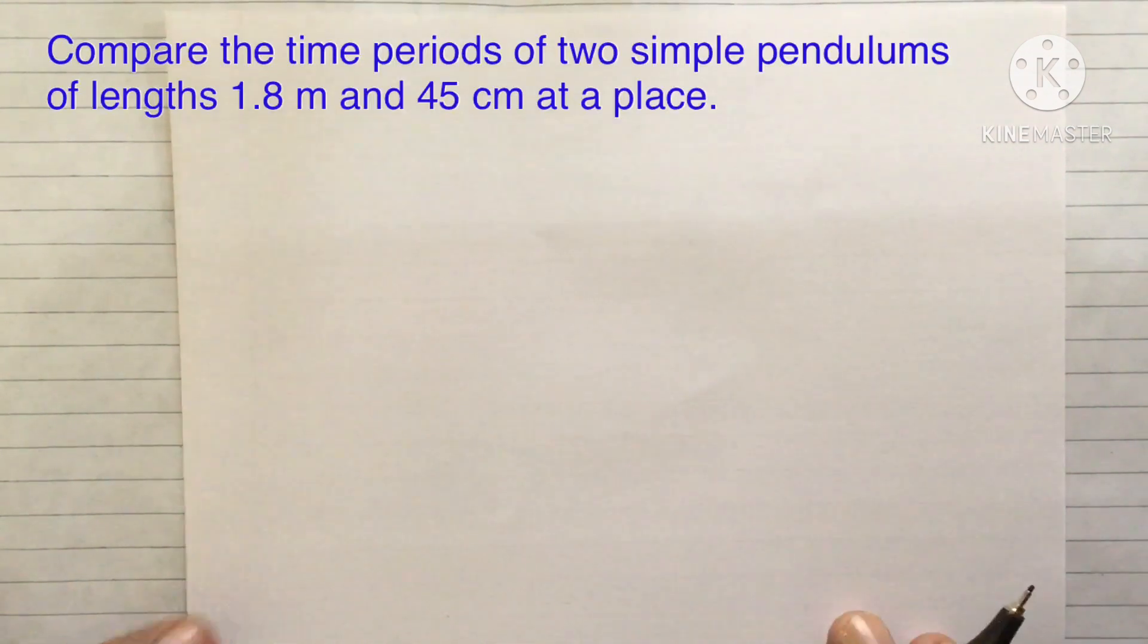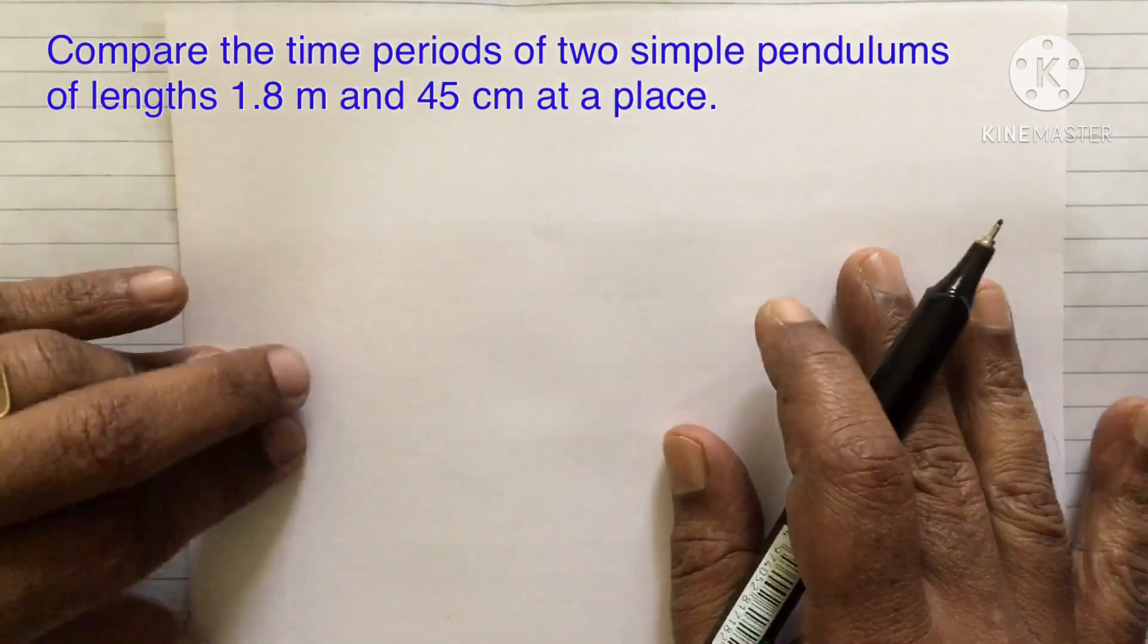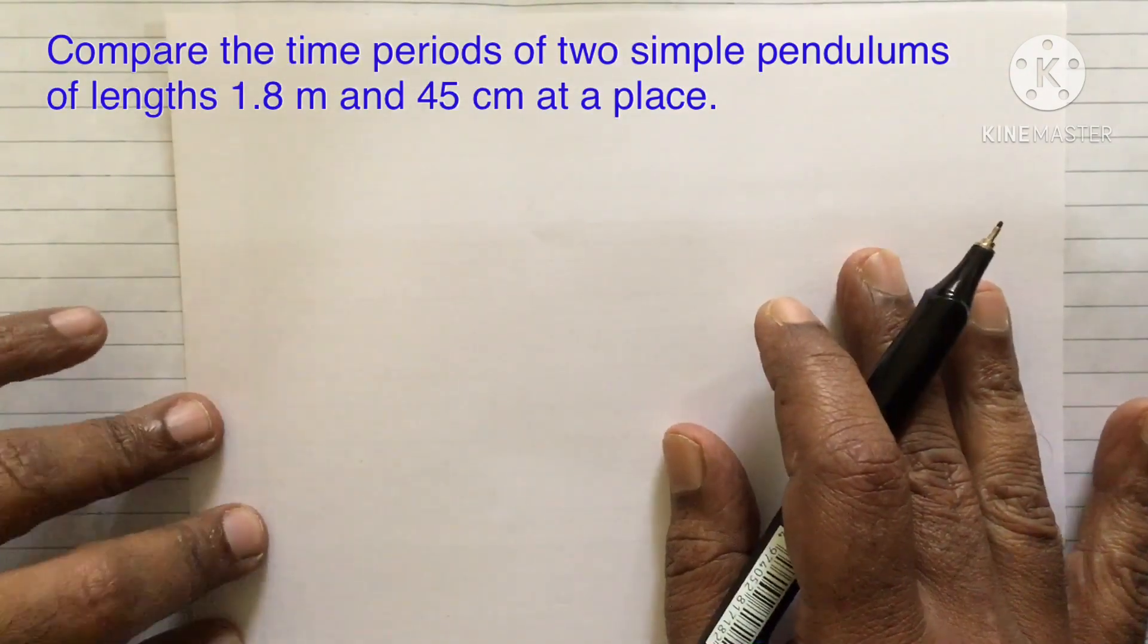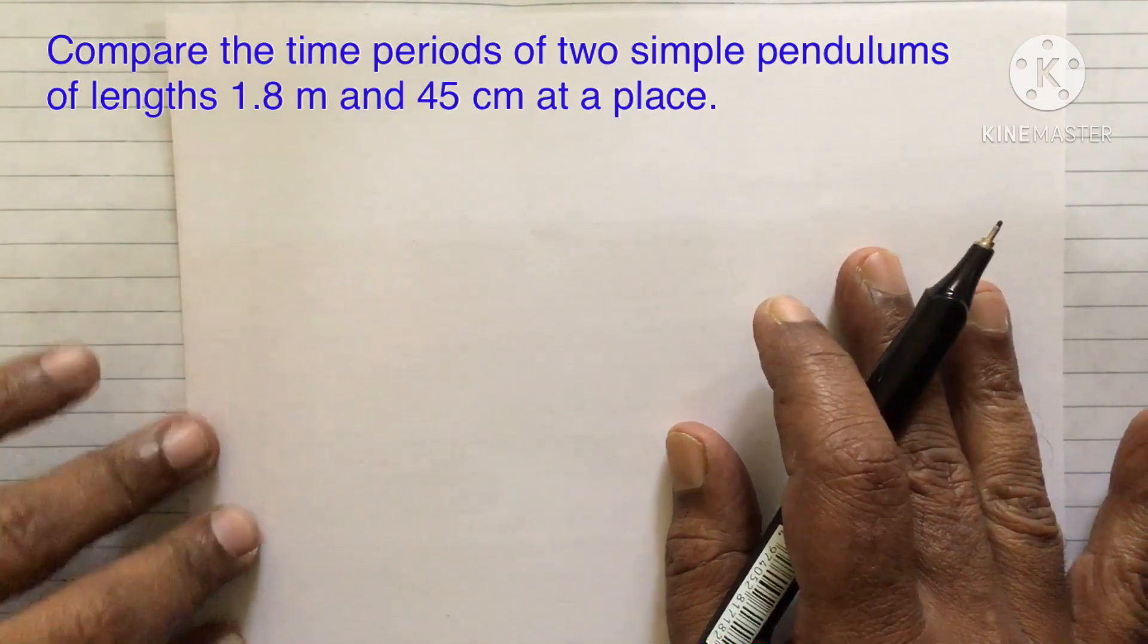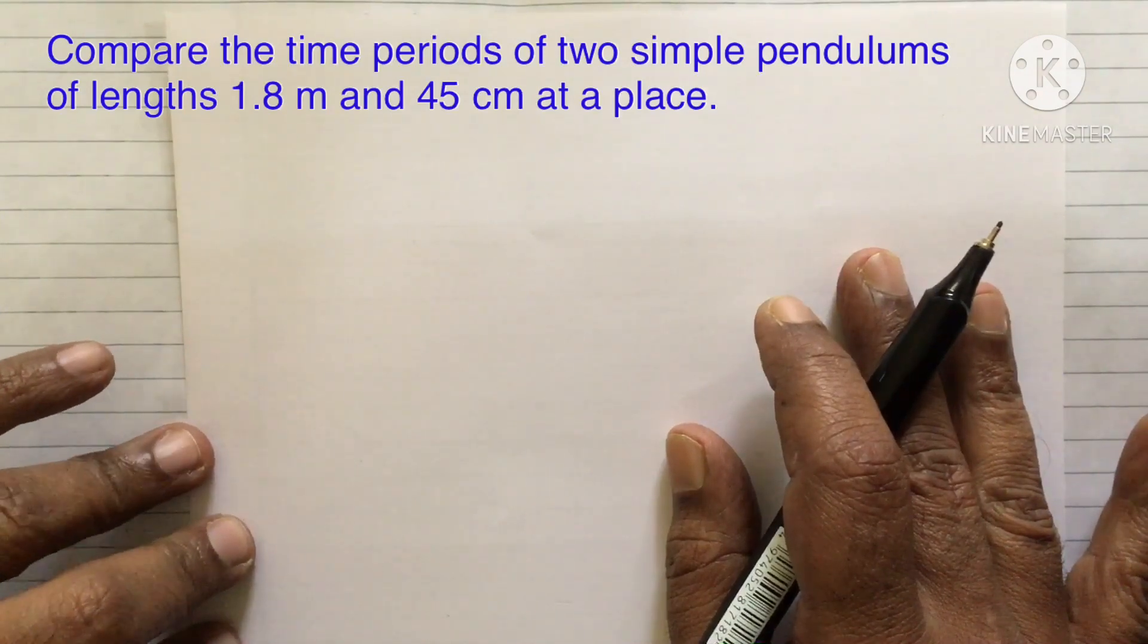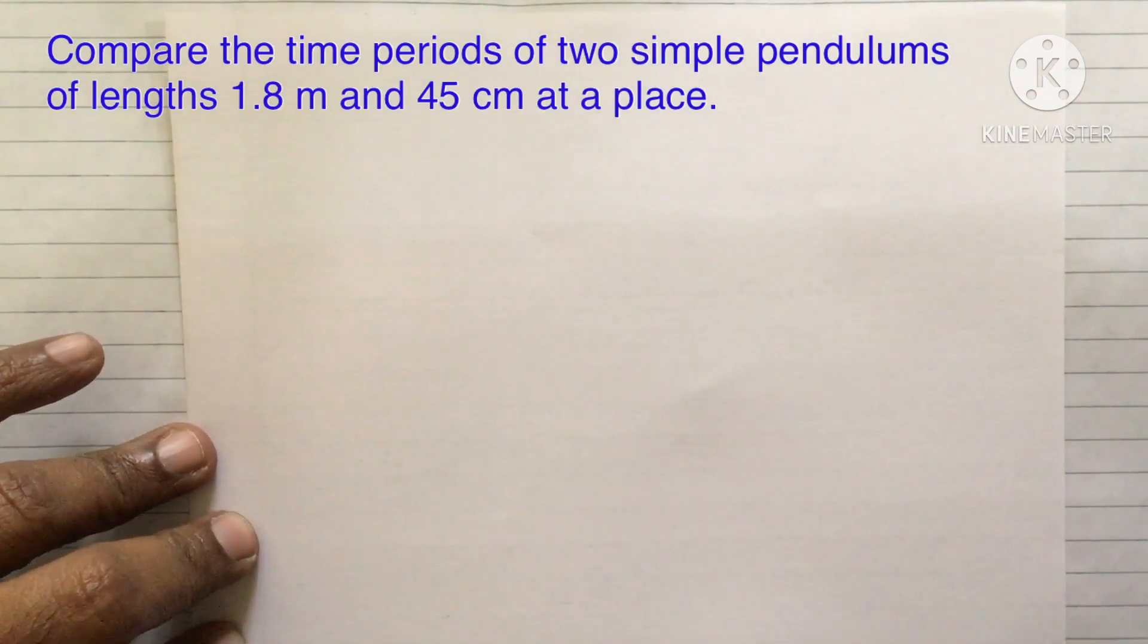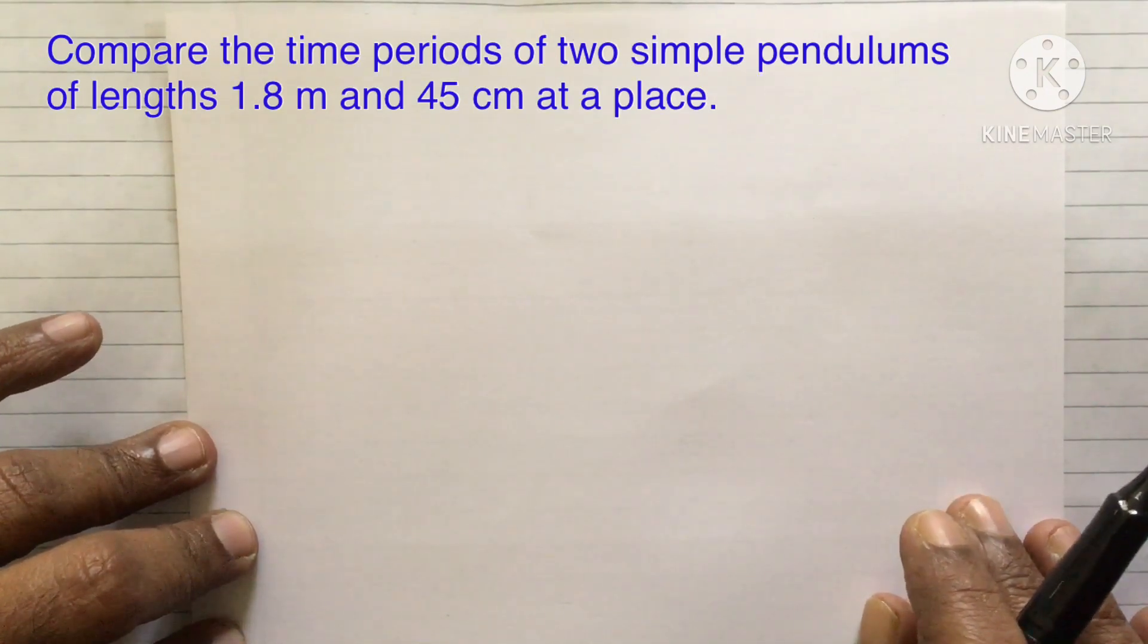So, here the question is to compare the time periods of two simple pendulums at a given place. You know that at a given place, time period of a simple pendulum depends only on the length of the pendulum because acceleration due to gravity is same for both the pendulums.